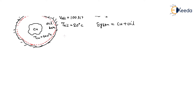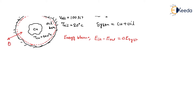From energy balance: energy in minus energy out equals delta E of the system. Energy transfer is due to mass, heat, and work. Since the system is insulated, there is no heat transfer, and there is no work done because of the rigid wall.